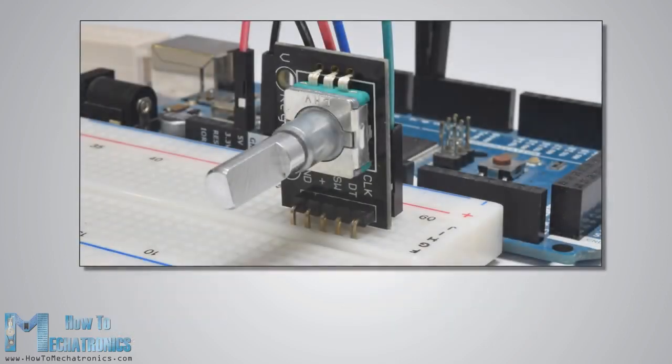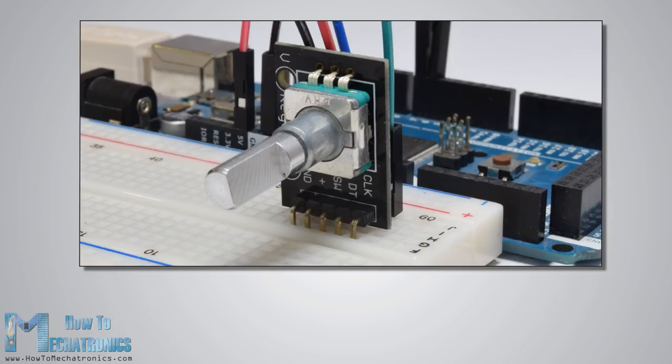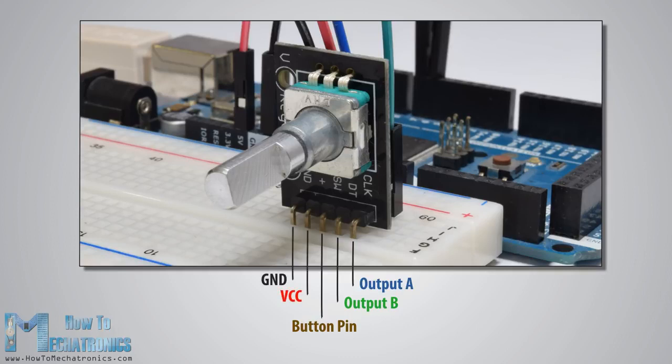The particular model that I will use for this example comes on a breakout board and it has five pins. The first pin is the output pin A, the second pin is the output pin B, the third pin is the button pin and of course the two other pins are the VCC and the ground pin. We can connect the output pins to any digital pin of the Arduino board.